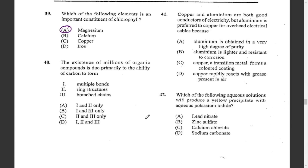Question forty: the existence of millions of organic compounds is due primarily to the ability of carbon to form multiple bonds, ring structures, and branched chains. That covers statements one, two, and three. The answer is D.